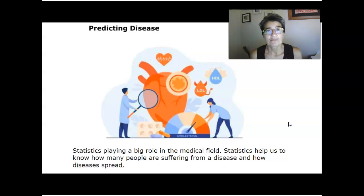Statistics are used in predicting disease. They play a big role in the medical fields. They might help doctors know how many people are suffering from a certain disease and how diseases spread, whether different treatments help with curing or alleviating the effects of different diseases.